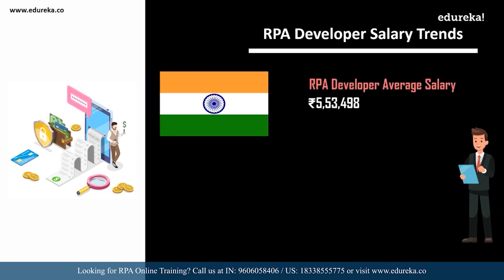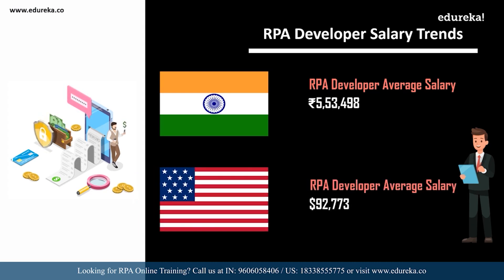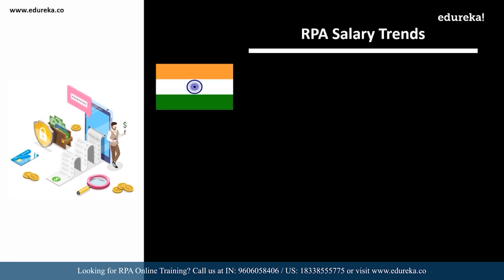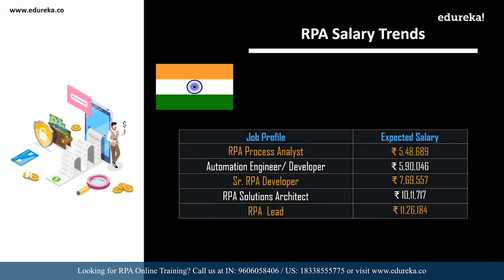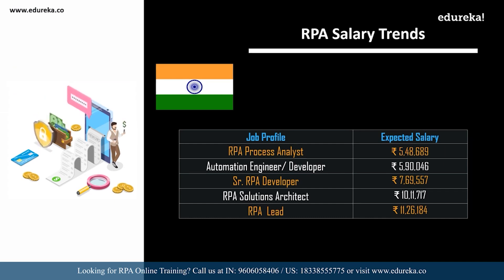According to Indeed.com, on average an RPA developer can expect a salary of 5 lakhs 53,000 per annum in India. Looking at other related job roles in India: an RPA process analyst can expect around 5,48,000 per annum; an automation engineer or automation developer around 5,90,000; a senior RPA developer around 7,69,000; an RPA solutions architect around 10,11,000; and an RPA lead can expect around 11,26,000 per annum.